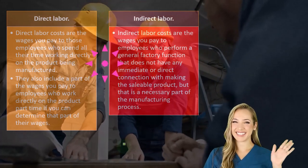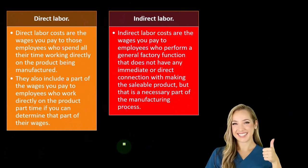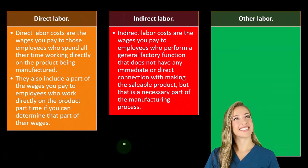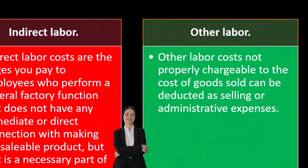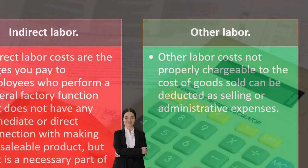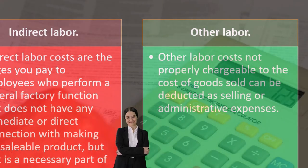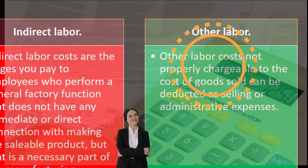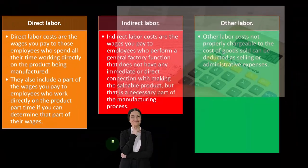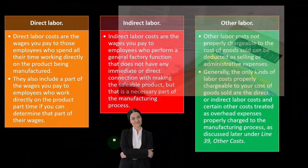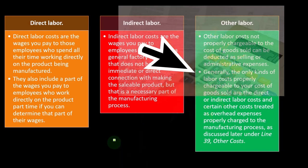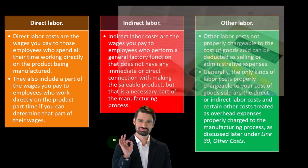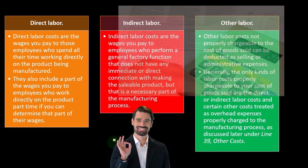Indirect labor has no immediate or direct connection with making the saleable product, but is a necessary part of the manufacturing process. Other labor costs not properly chargeable to cost of goods sold can be deducted as selling or administration expenses. Generally, the only labor costs properly chargeable to cost of goods sold are direct or indirect labor costs and certain other costs treated as overhead expenses properly charged to the manufacturing process.